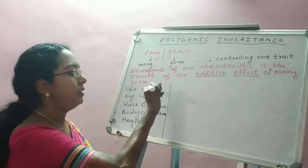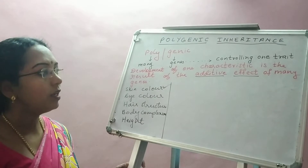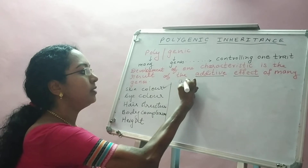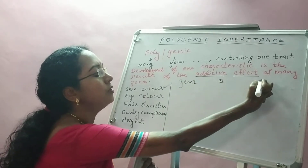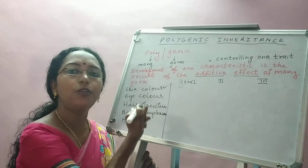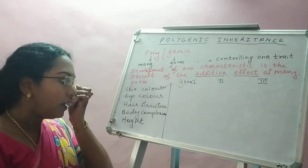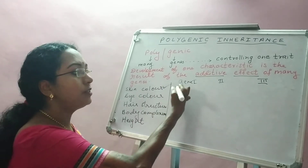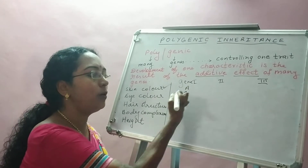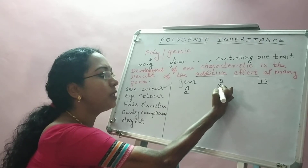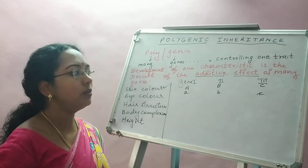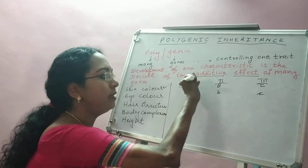Let's take the example of skin color. Skin color is controlled by three genes: Gene 1, Gene 2, and Gene 3. Any gene has two forms, so Gene 1 has forms capital A and small a, Gene 2 has capital B and small b, and Gene 3 has capital C and small c.